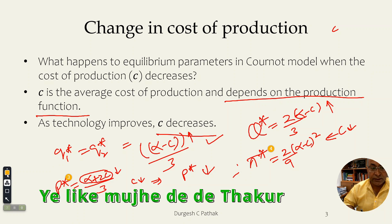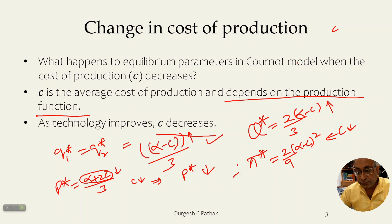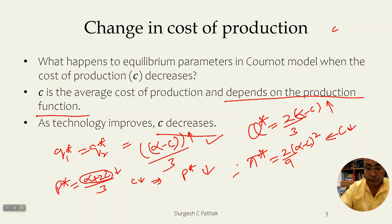This is how the different parameters change in the Cournot model when we change variables of the model — first alpha, the market demand parameter, and second C, the cost of production. Stay tuned, we will come back with more videos. Thanks for watching and bye.